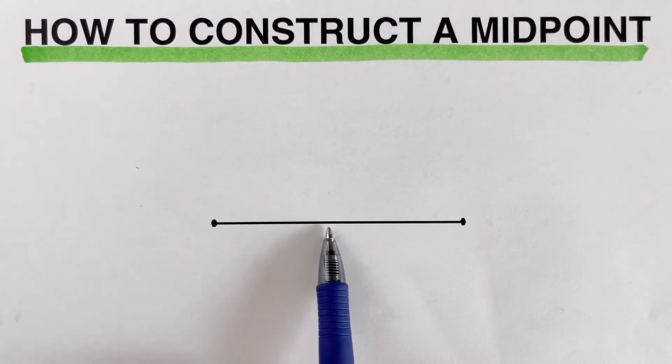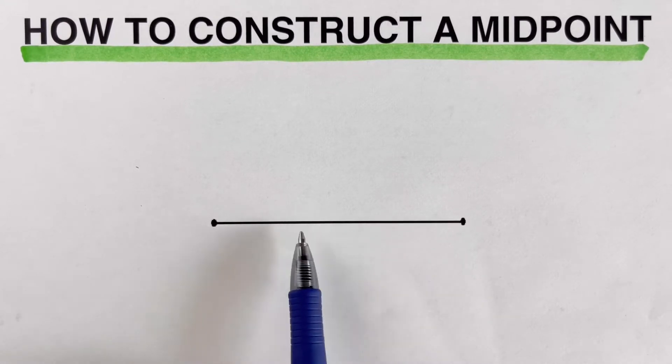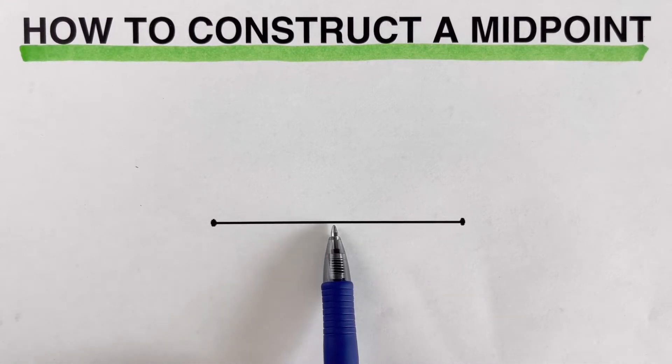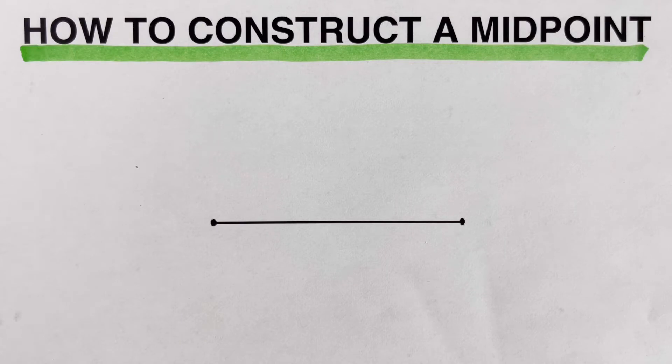But we cannot just simply randomly put it wherever we want or just approximate it. Again, today we will be using compass and a ruler. So let's get started.